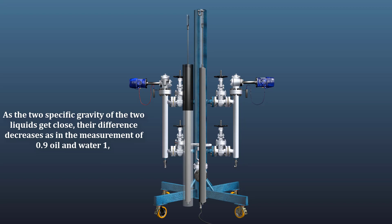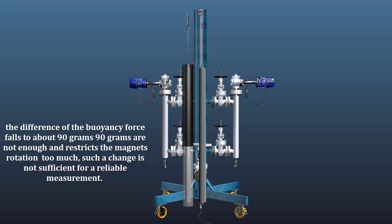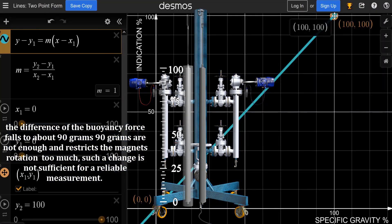As in the measurement of 0.9 oil and water 1, the difference of the buoyancy force falls to about 90 grams. 90 grams are not enough and restricts the magnet's rotation too much. Such a change is not sufficient for a reliable measurement.